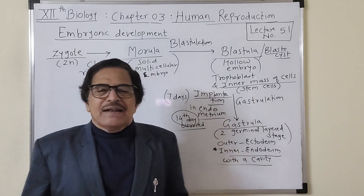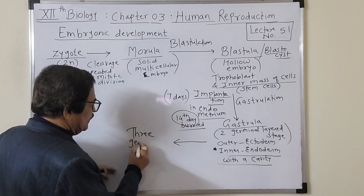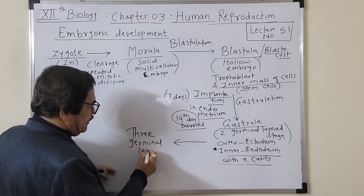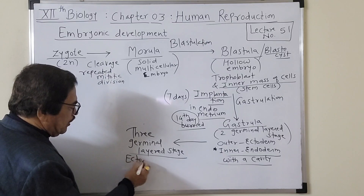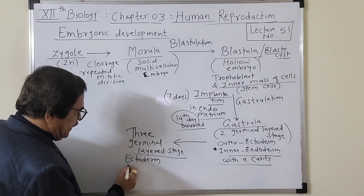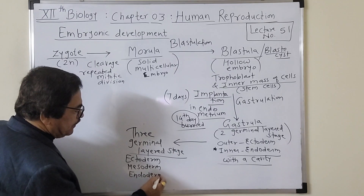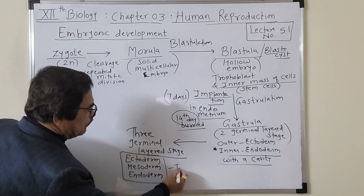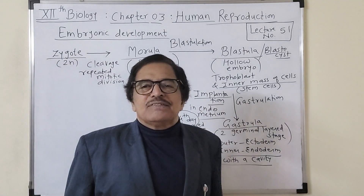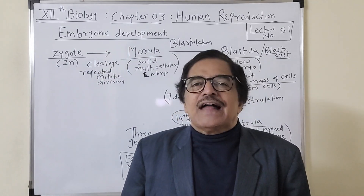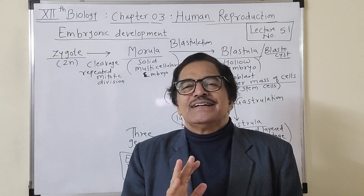After the two-germinal-layered stage, it is converted into the three-germinal-layered stage, which is a very important stage called the embryo. The three germinal layers are: ectoderm and endoderm, which are already present, and the mesoderm which develops in between them. This is why we are called triploblastic animals — organisms whose body wall is composed of three layers: outermost ectoderm, middle mesoderm, and innermost endoderm.